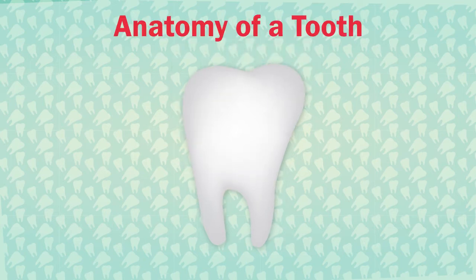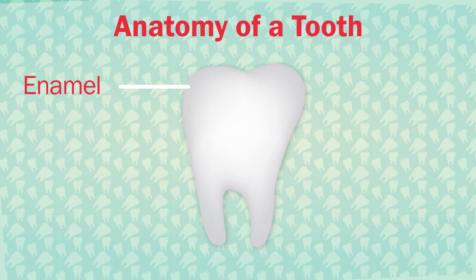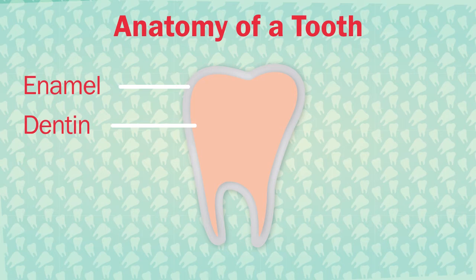It might help to understand more about the different parts of a tooth, called the anatomy of a tooth. The outside layer of a tooth is called enamel. It's hard and protects the other layers from bacteria, food, and pain. Dentin is the next layer. It is hard but porous, which means it has small holes. It can't protect the inside of your tooth if it's exposed.